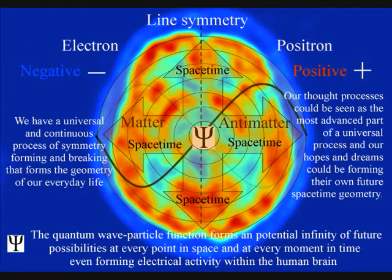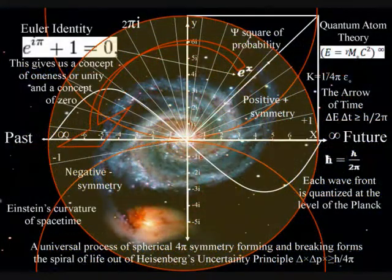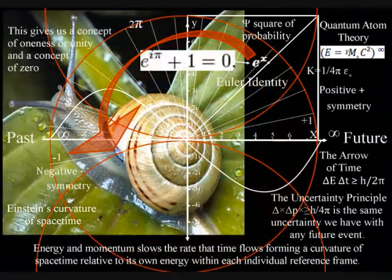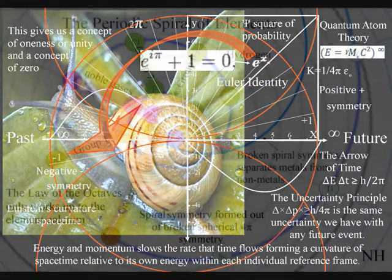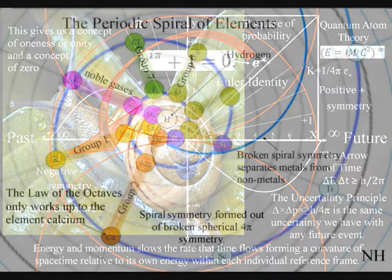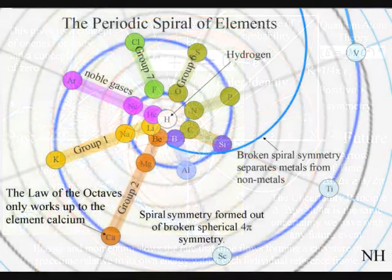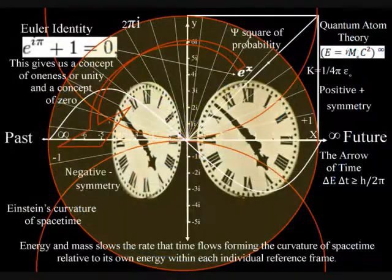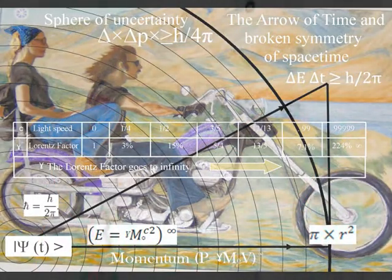This process is totally universal and interactive, from the largest object to the smallest creature, right down to the smallest element of the periodic table, will slow the rate that time flows, forming a curvature of space-time relative to its own energy or mass.